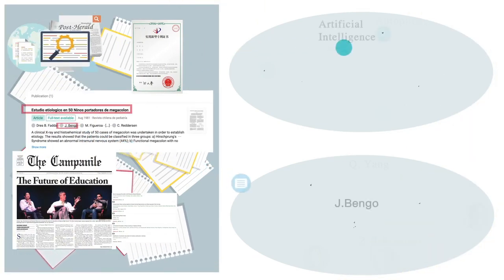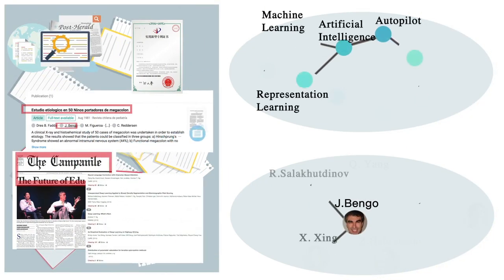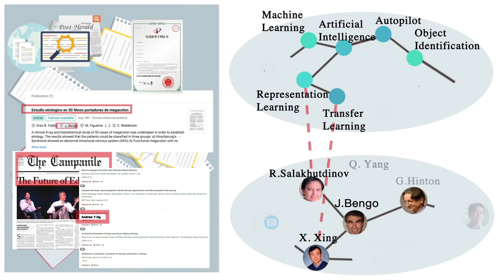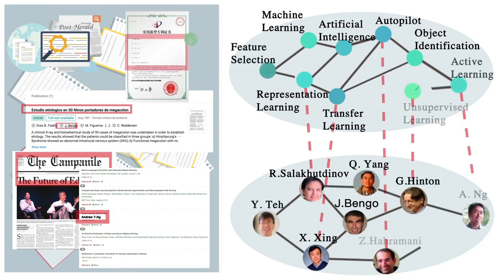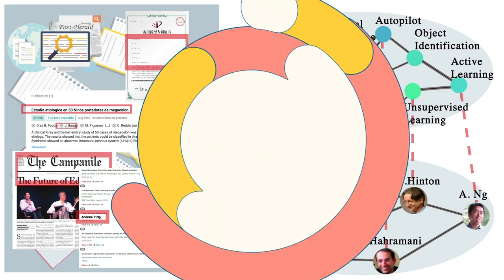In AMiner, we extract heterogeneous information from publications, patents, news articles, social media, Wikipedia, and integrate this information to construct an academic knowledge graph.